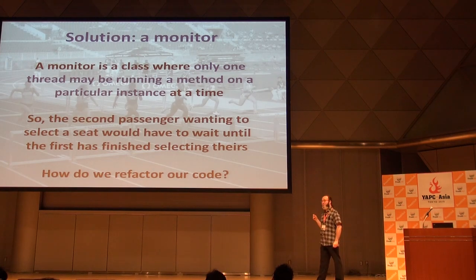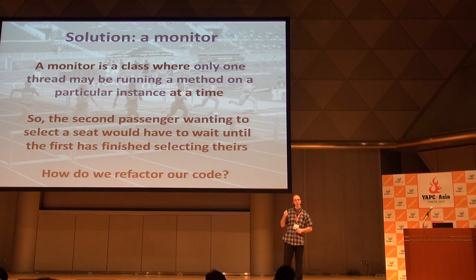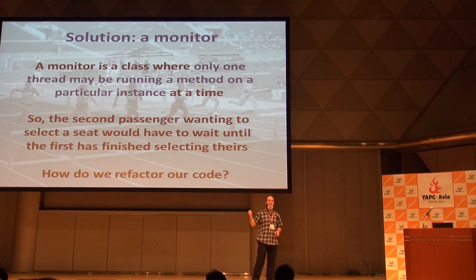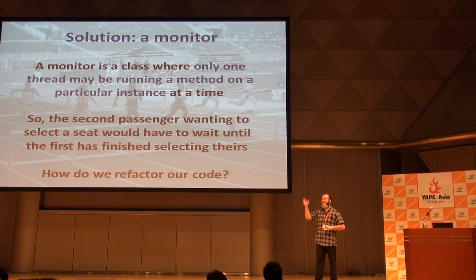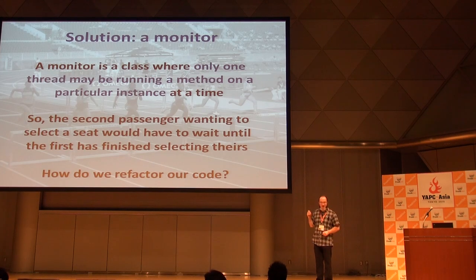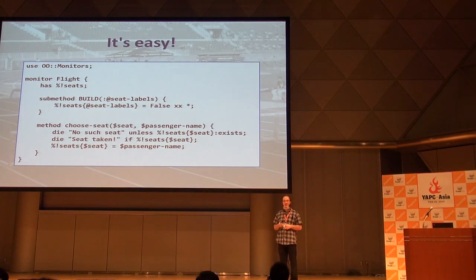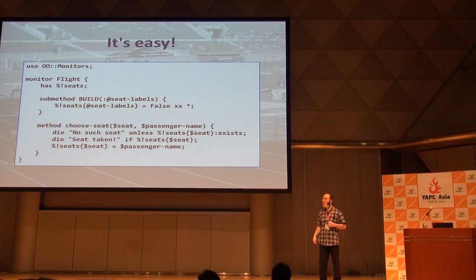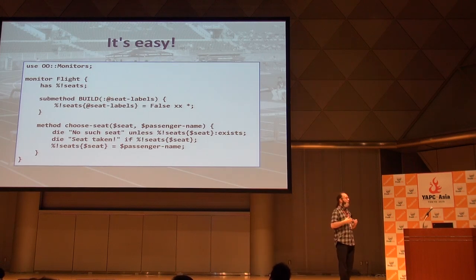Here's naive code for this: a class with a hash of seats, a check-if-seat-exists, and a claim-seat method. If two threads come in at the same time there's a data race — they could both see the seat as available and both claim it. The solution is to turn to a monitor. A monitor is a kind of class that ensures only one thread can be in any of its methods on a particular instance at a time. In Perl 6, the `OO::Monitors` module does this. Perl 6 is a very mutable language — the entire change is: `use OO::Monitors` and change `class` to `monitor`. The module uses rich metaprogramming to acquire a lock around every method call.